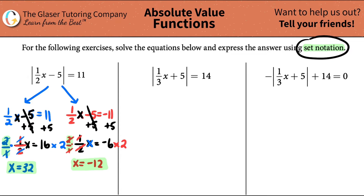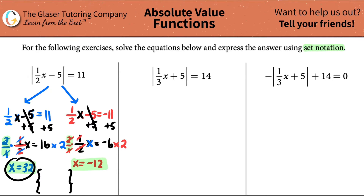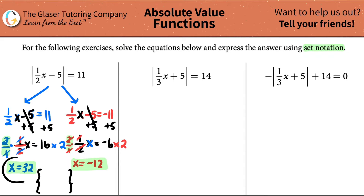However, this question says we have to use set notation. What is that? It's just a fancy way of representing your answers — you put them in brackets. Set notation is always written with increasing numbers, so you put the lower number on the left and the higher number on the right. We have 32 and negative 12. Negative 12 is less than 32, so we start with negative 12, then a comma, then 32. And that is your final answer for this one.